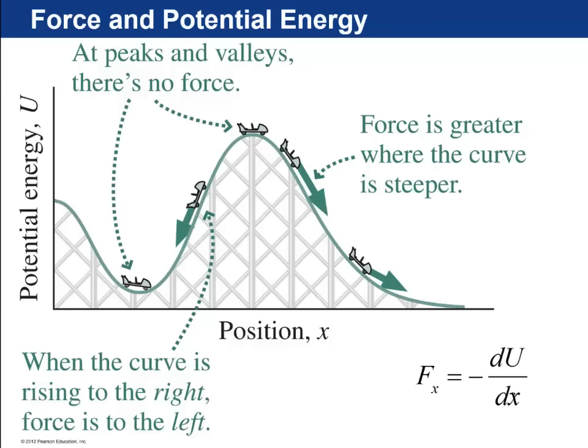If it's a positive slope, that means that the force is negative. If it's a negative slope, it means the force is positive. And it turns out that the spatial derivative of potential energy gives you a force. And that is it for Chapter 7. I will see you in class.